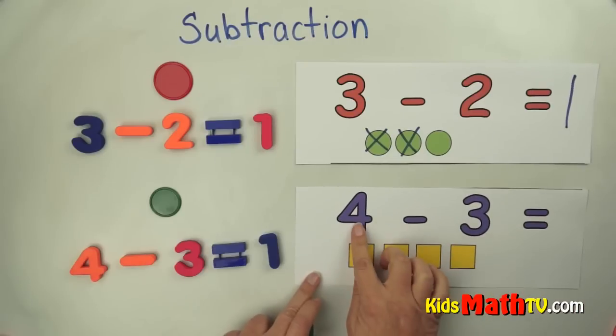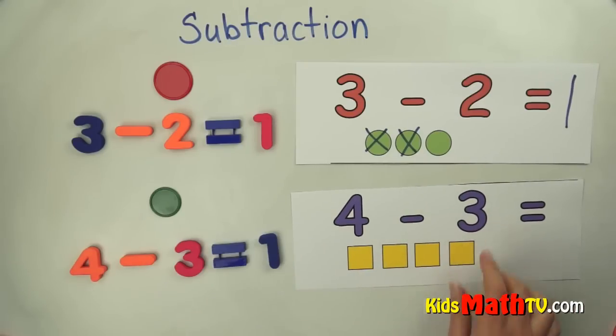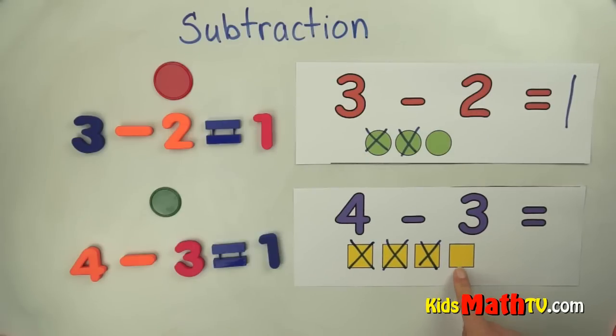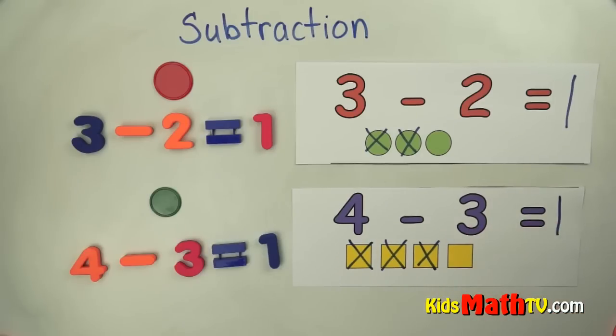Here's our problem. Four, subtract, three. We take away three: one, two, three. How many are left over? One box is left over. So four, subtract, three, equals one. That's the end of our lesson on subtraction.